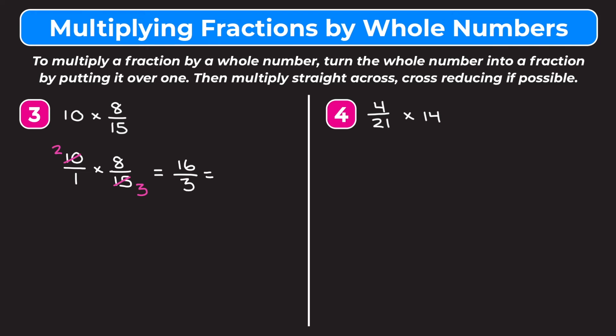We change sixteen-thirds into a mixed number. Three goes into sixteen five times; five times three is fifteen, so we have one left over. Our answer is five and one-third.